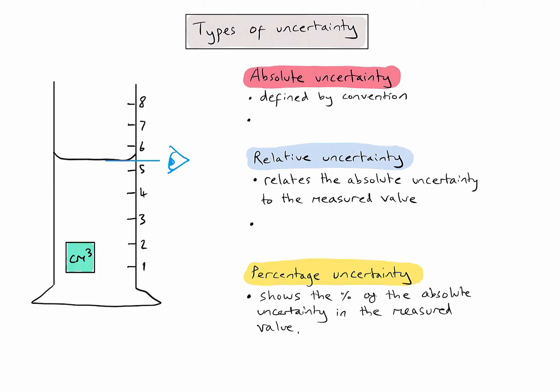Because we're allowed to estimate to half the smallest gap on my piece of equipment, I would call this reading 5.5 centimetres cubed. To identify the absolute uncertainty, I follow the scientific convention for analogue equipment, which means I record plus or minus half the smallest division in my graduations. So given that the smallest graduations is 1, my absolute uncertainty is plus or minus 0.5 centimetres cubed.